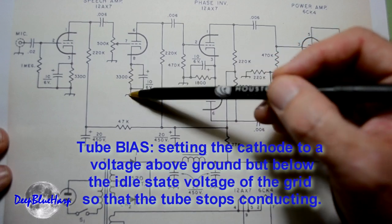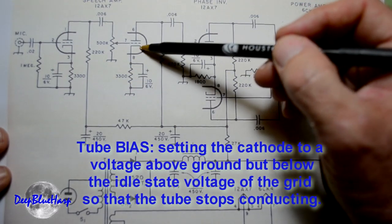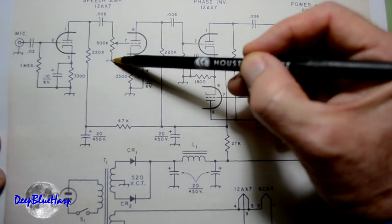Again, this here, this resistor and capacitor just brings this cathode above ground potential. This is ground.